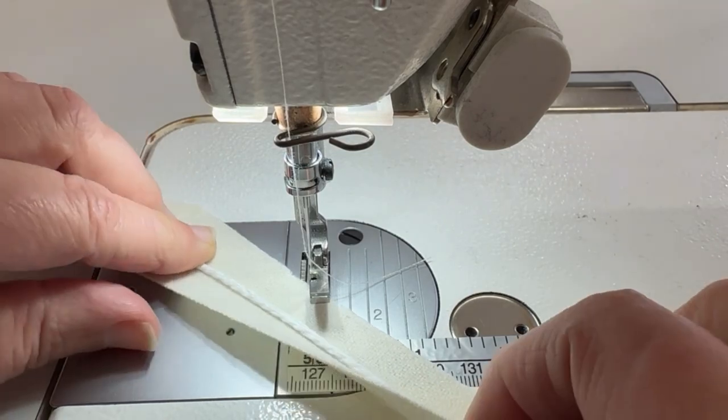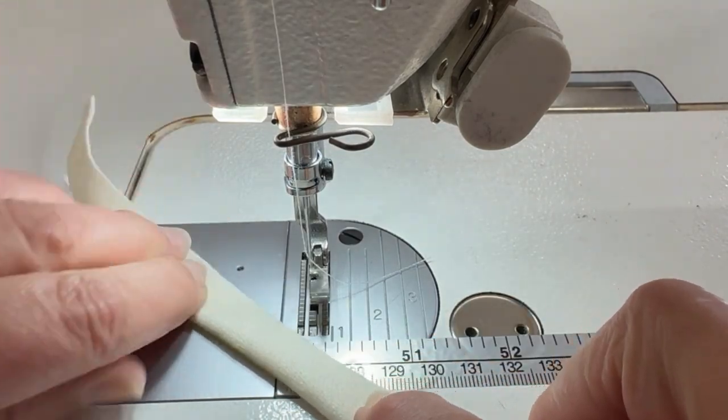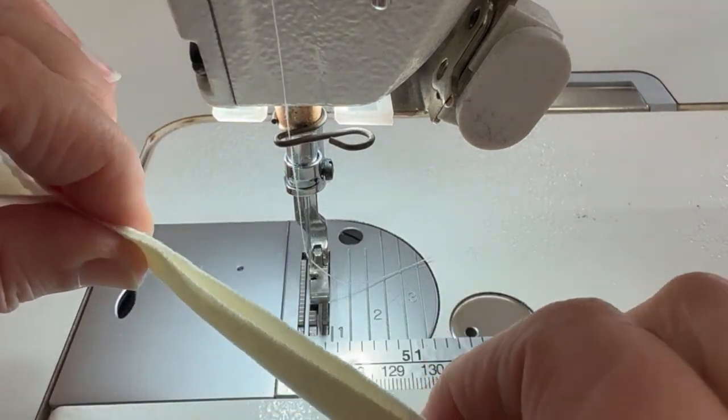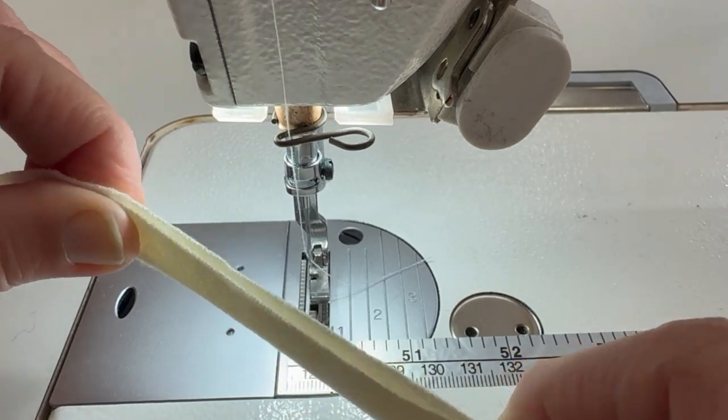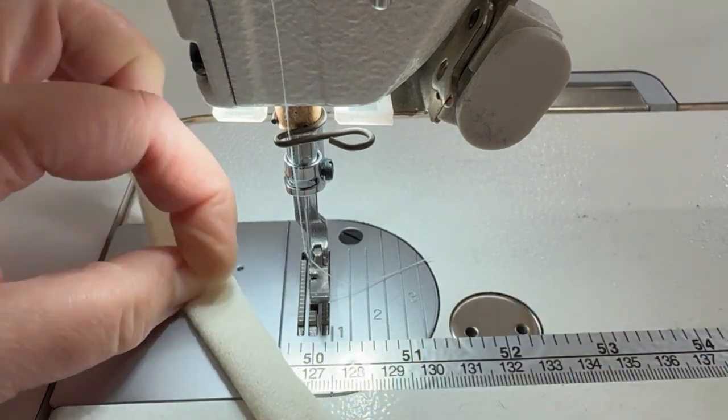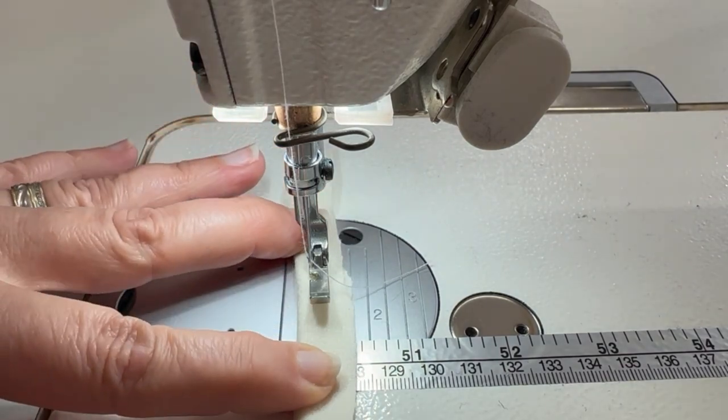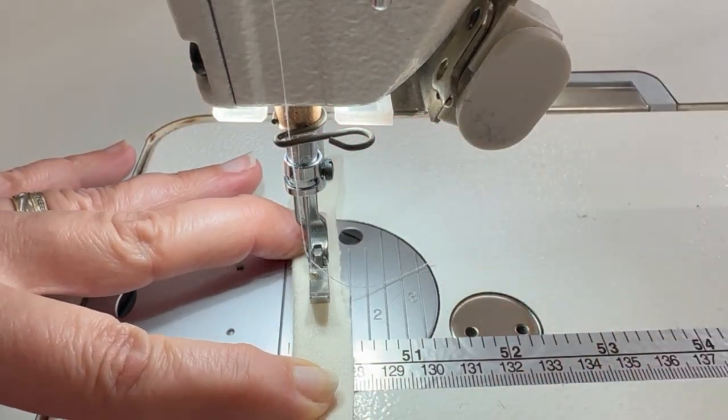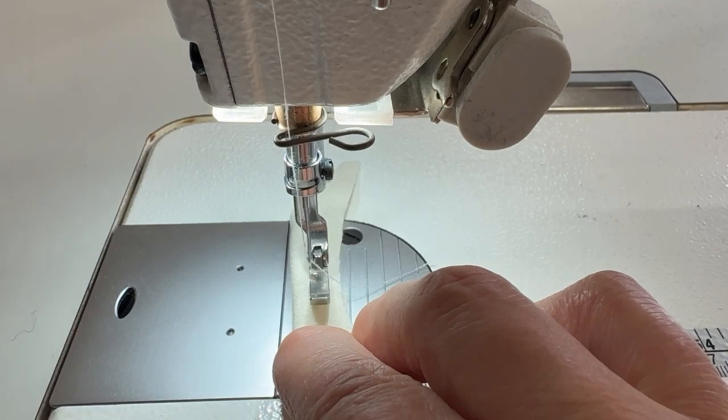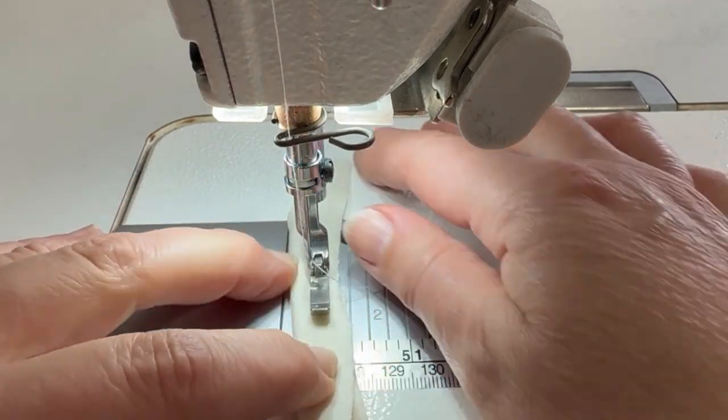You can cut it on the bias, but generally you cut it on the straight. It's got enough flexibility in it. This is a melton wool, and you just wiggle it in, making sure that your piping is as close to the fold as possible. Then you line it up, and you don't want to sew on the piping cord.